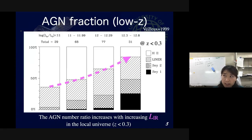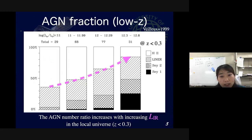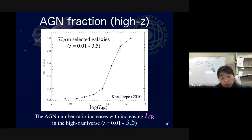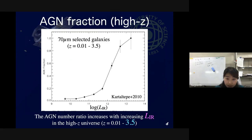Since the late 1980s or 1990s, the dependence of AGN fraction on infrared luminosity has been studied. In the local universe, many studies found that the AGN fraction increases with increasing infrared luminosity. And also at redshifts up to 3.5, a similar trend — AGN fraction increasing with increasing infrared luminosity — can be seen.